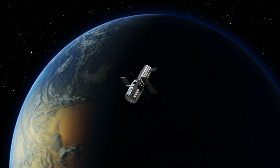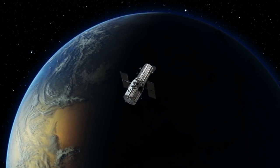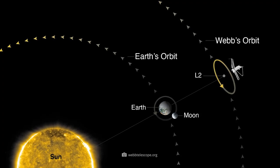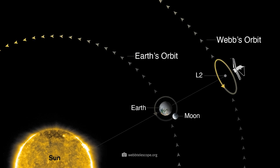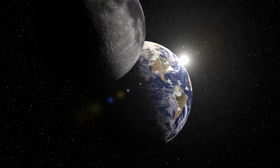Hubble, to date, is located at a distance of 342 miles. James Webb, on the other hand, is positioned a full 900,000 miles from Earth in space. That is more than four times as far away as the moon.